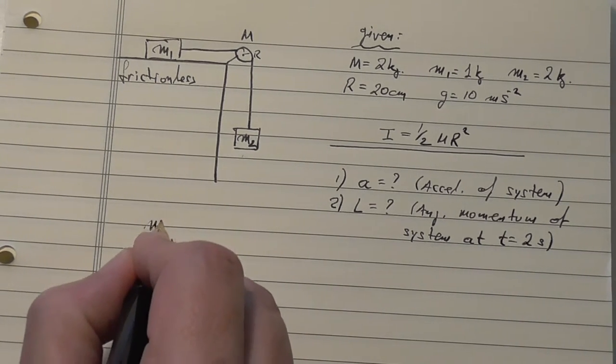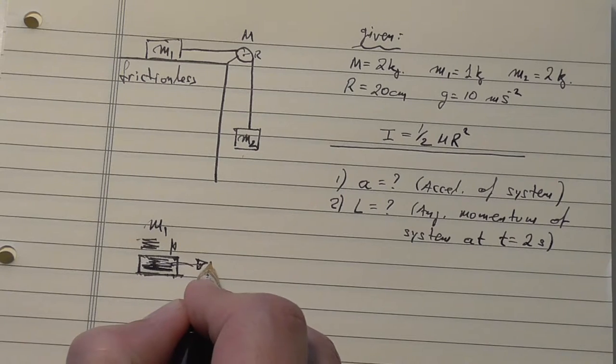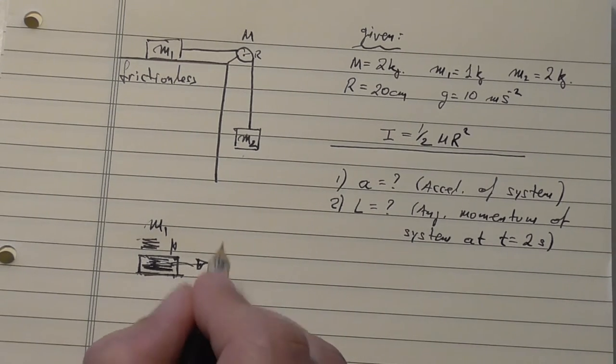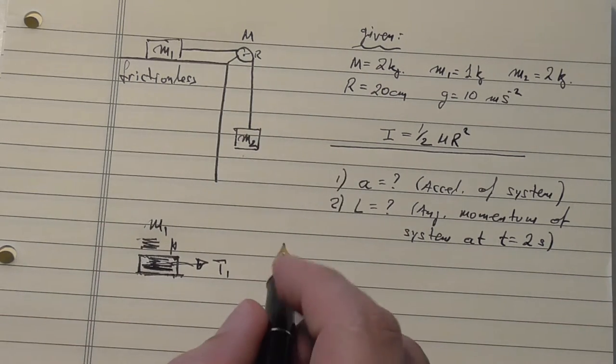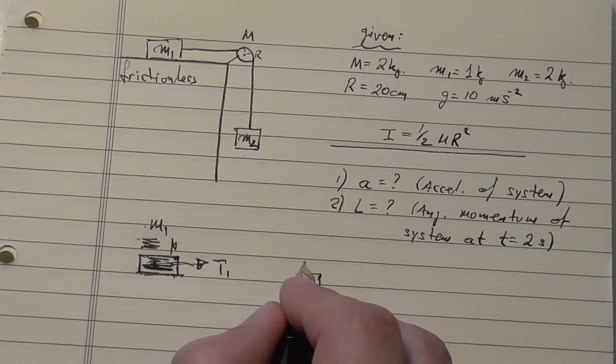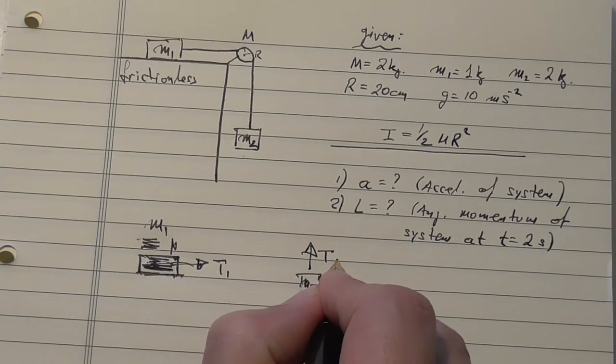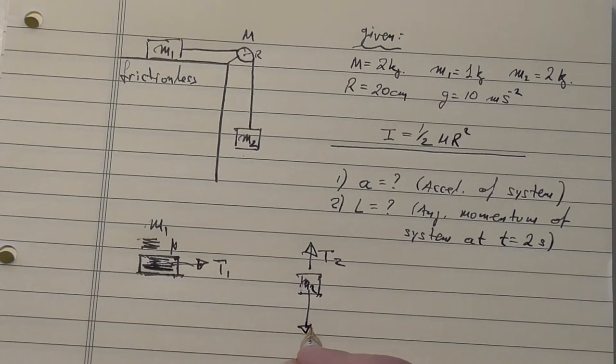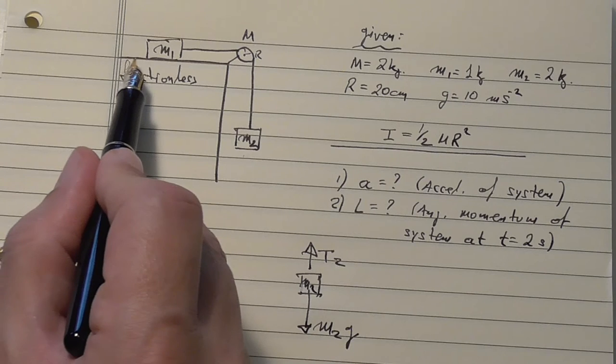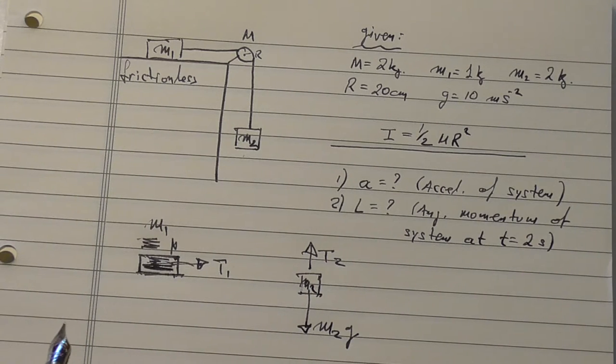Let's say this would be m1, the first mass of the system, and it has its own tension, T1. Now, the tensions would be different now, because there is a net torque on the disk. Second mass would be m2, so I'm doing free body diagram on this. That would be T2, tension on this mass, and there is a weight, m2g.